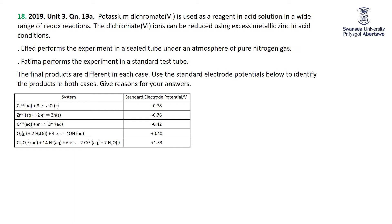So let's see what we've got. We've got potassium dichromate, which of course we've seen a lot, is used as a reagent in acid solution in a wide range of redox reactions. The dichromate ions can be reduced using excess metallic zinc. So dichromate is going to be reduced, that means the zinc is going to be oxidized.